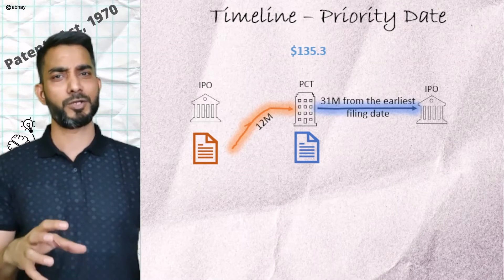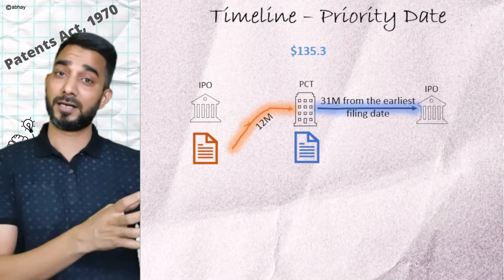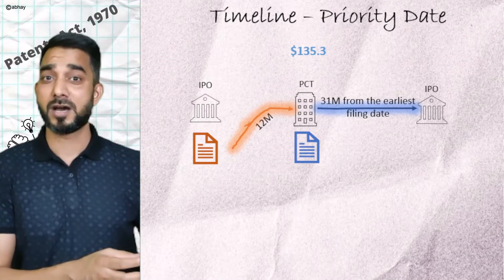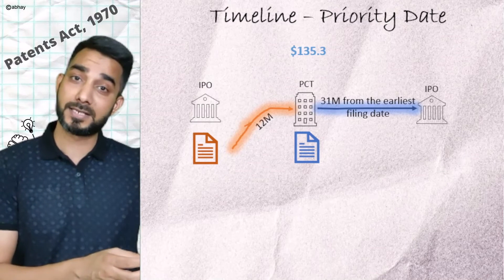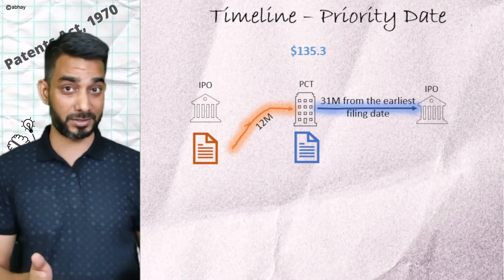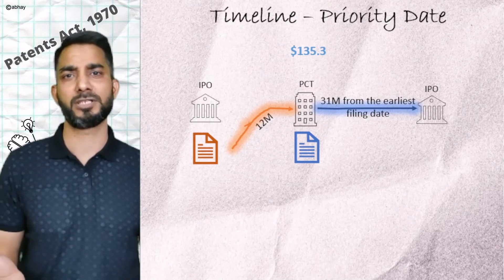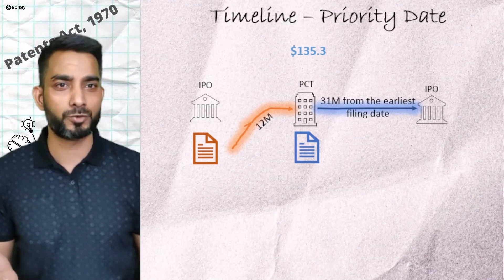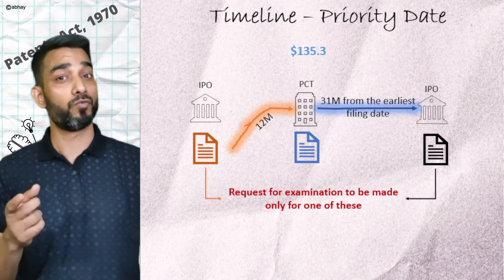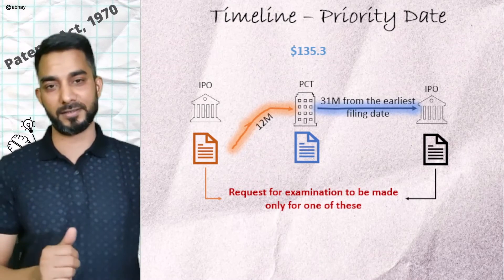As per Section 135.3, consider a case where you had an Indian application, took priority from it, filed a PCT international application, and then re-entered the Indian Patent Office through the national phase — so you have two applications: the basic application and the national phase application entered after 31 months from the earliest filing date. You need to file a request for examination for one of these applications, accordingly one gets forwarded and the other gets abandoned.